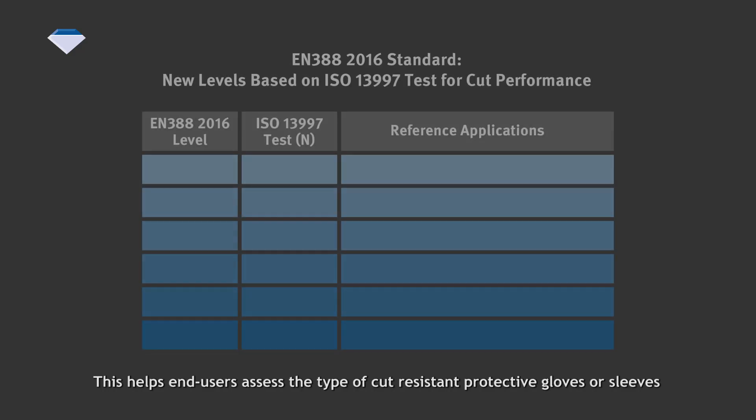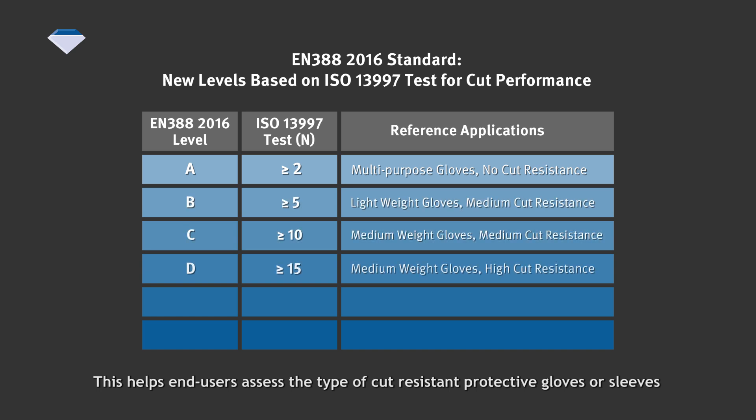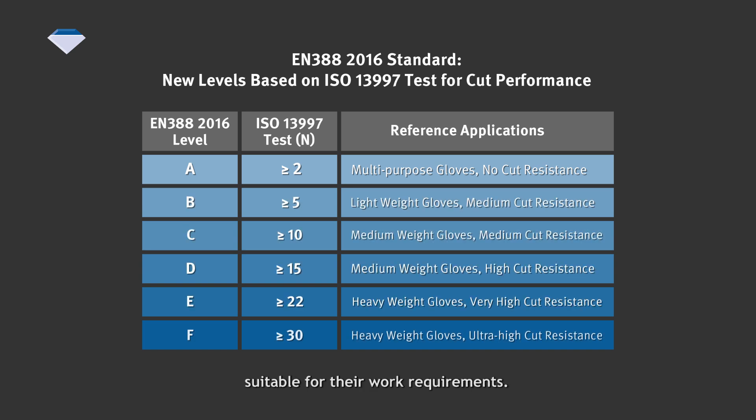According to the new EN388 2016 standard, cut levels are defined from A to F based on the following scores. This helps end users assess the type of cut-resistant protective gloves or sleeves suitable for their work requirements.